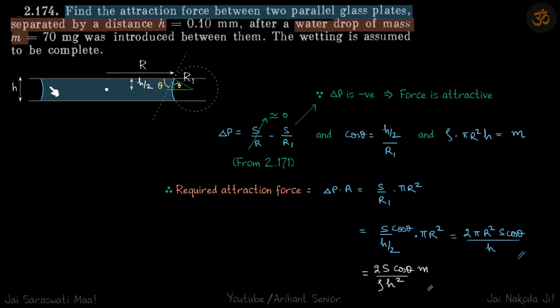The meniscus is like this, so inside pressure is going to be less than the outside pressure. If the excess pressure inside is negative, the plates will be pulled together.